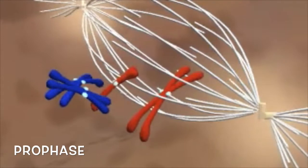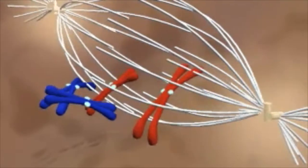During prophase, chromosomes condense from long strands into rod-like structures.